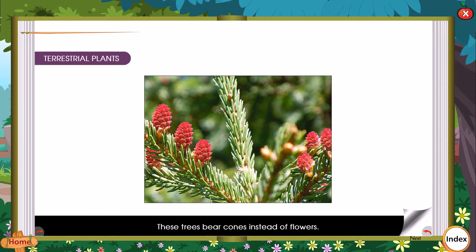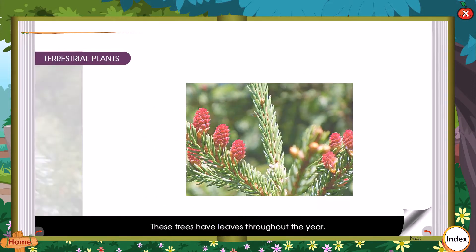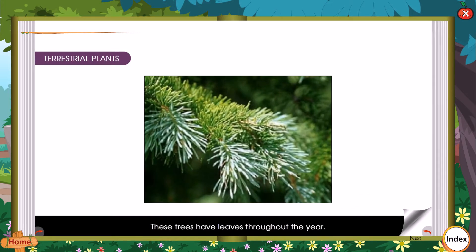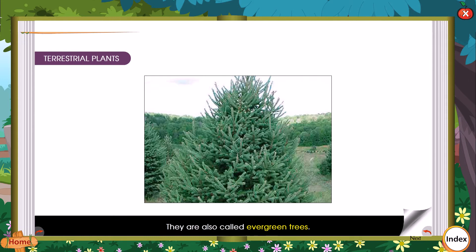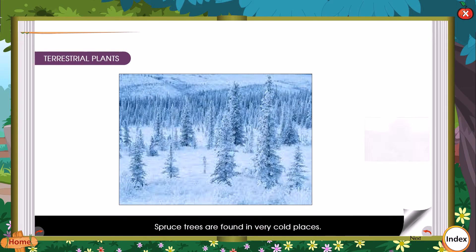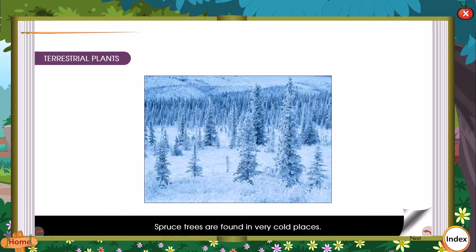These trees bear cones instead of flowers. They have leaves throughout the year — their leaves do not fall off in autumn. They are also called evergreen trees. Spruce trees are found in very cold places.